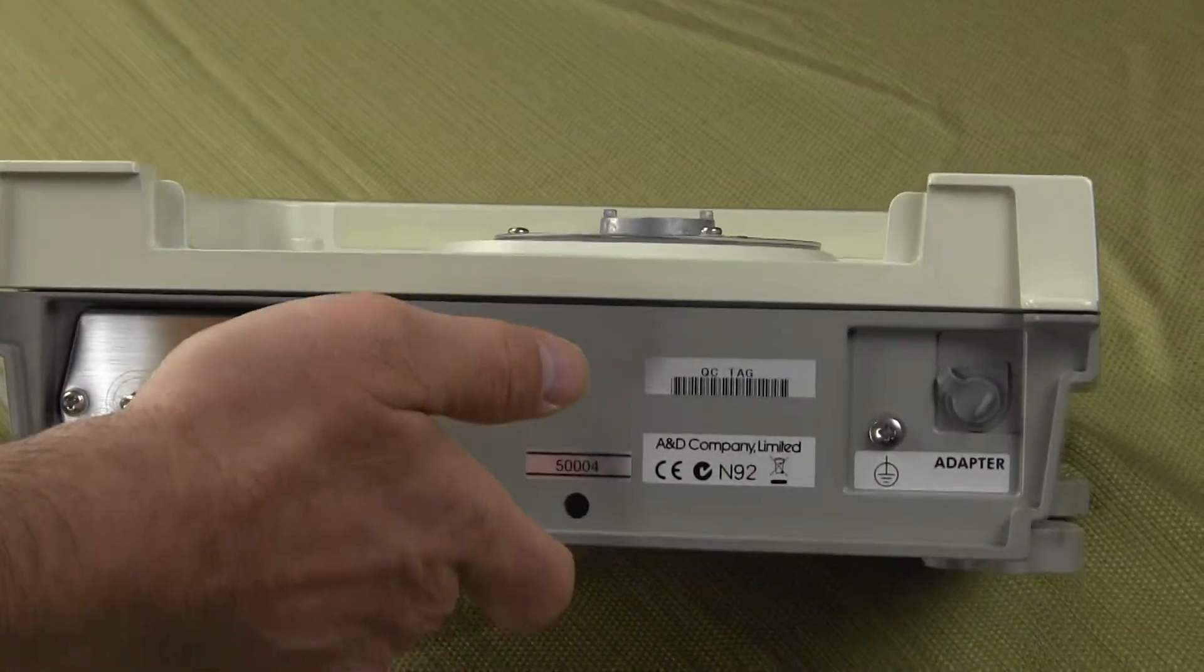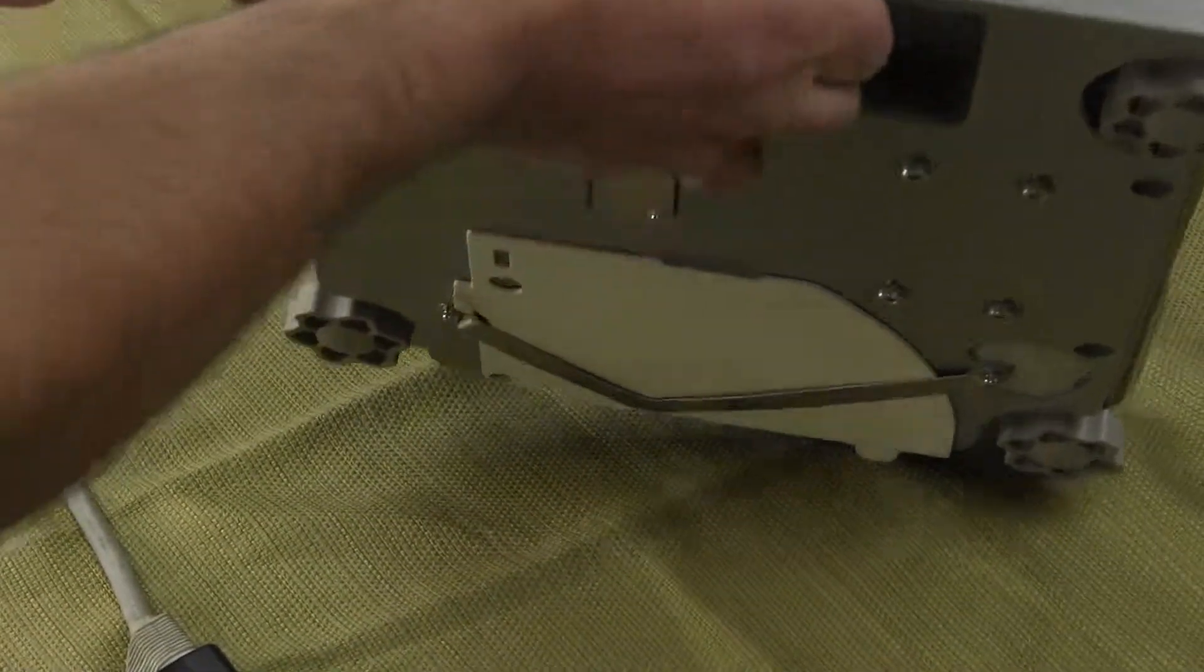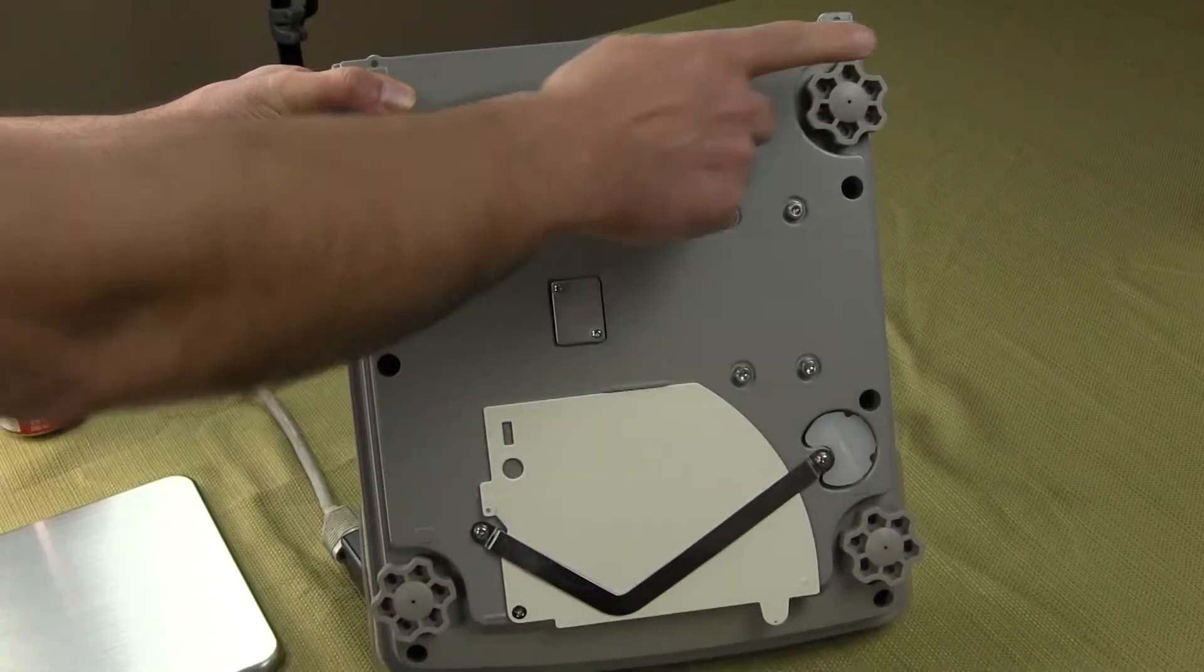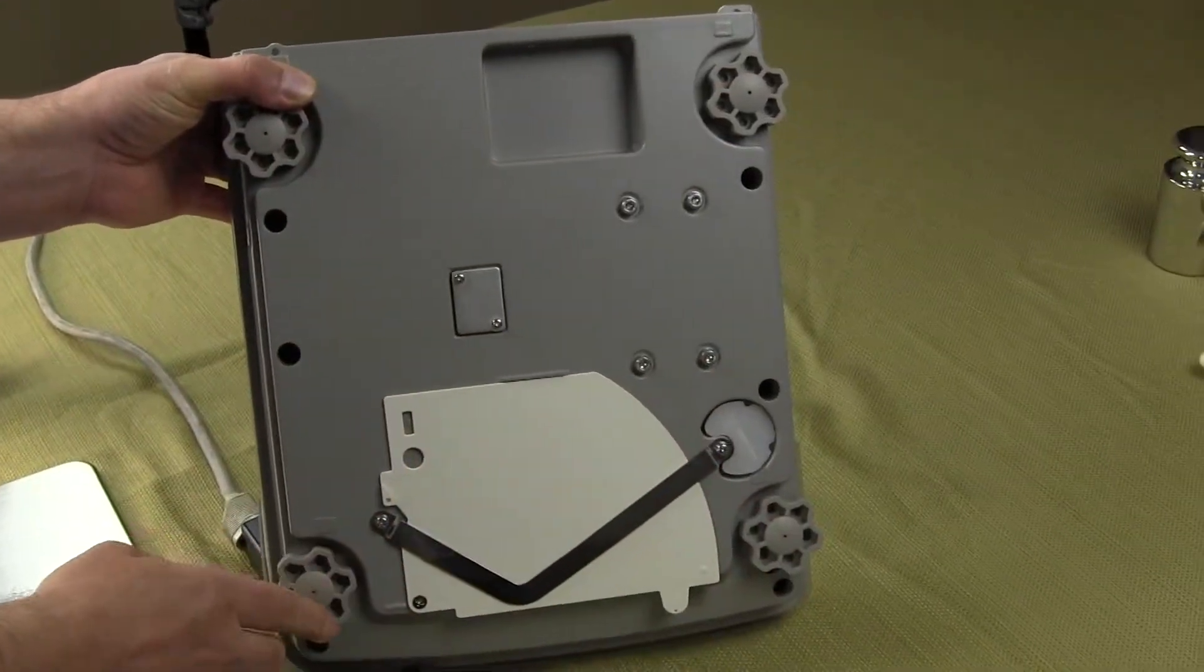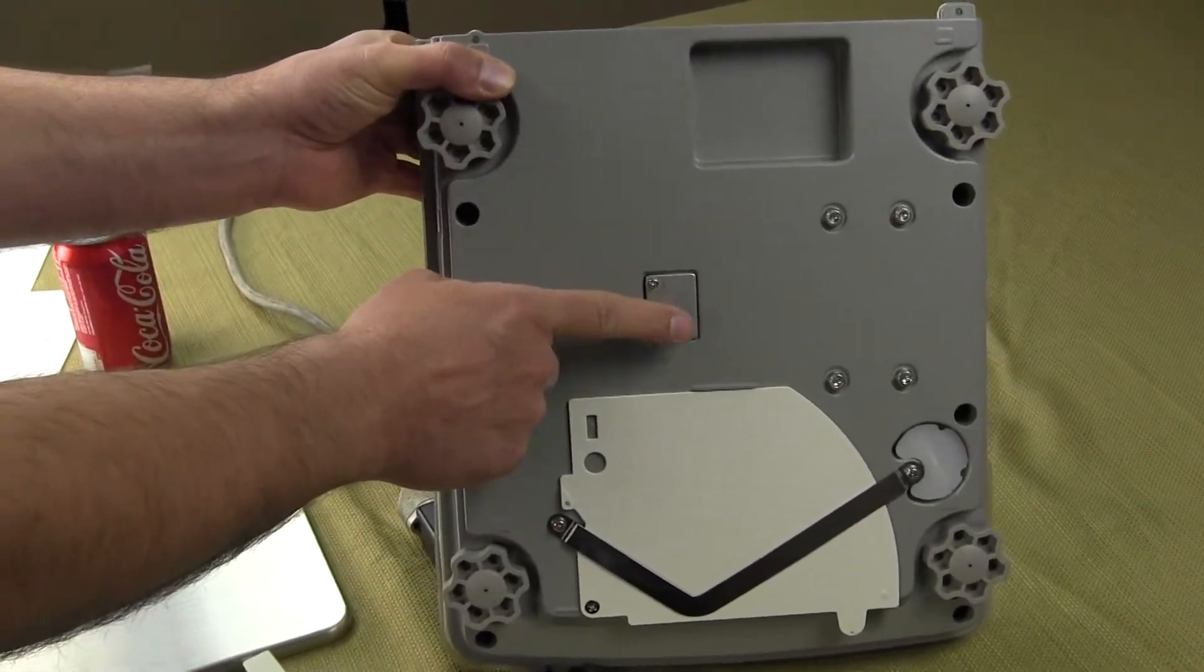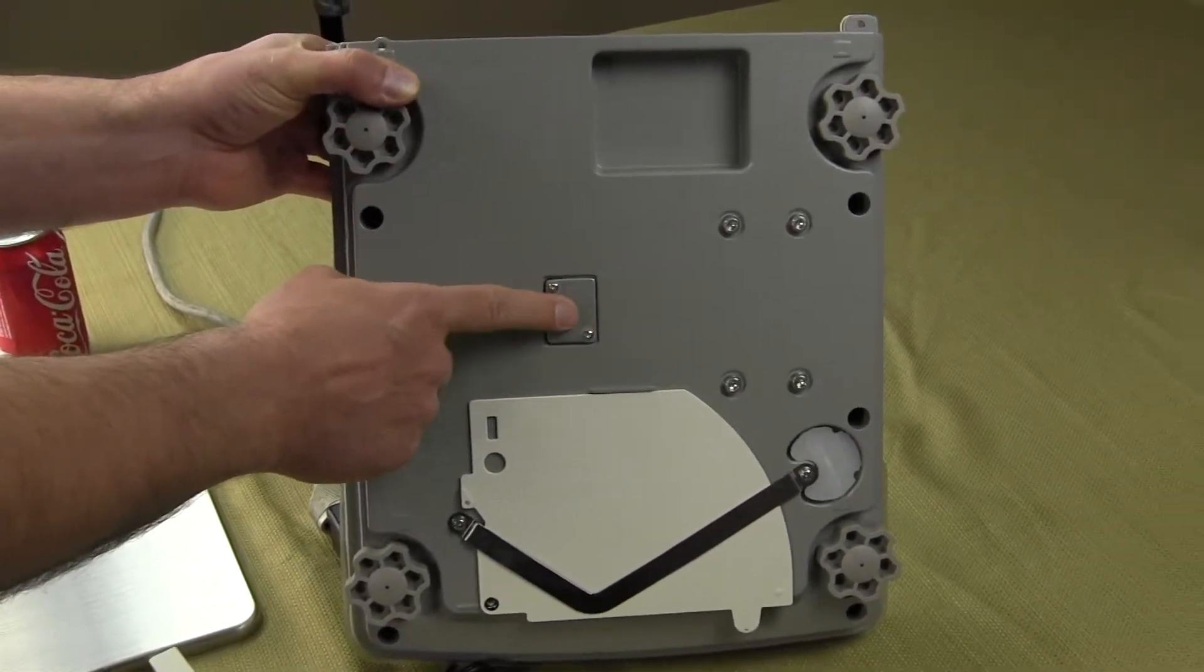I'll just remove that for a minute. On the bottom of the scale, we have four adjustable feet. Four adjustable feet for easy leveling.